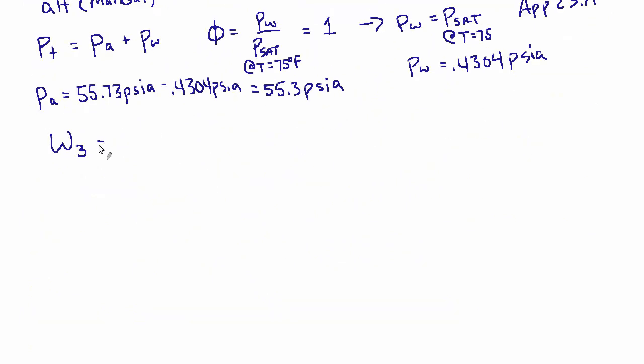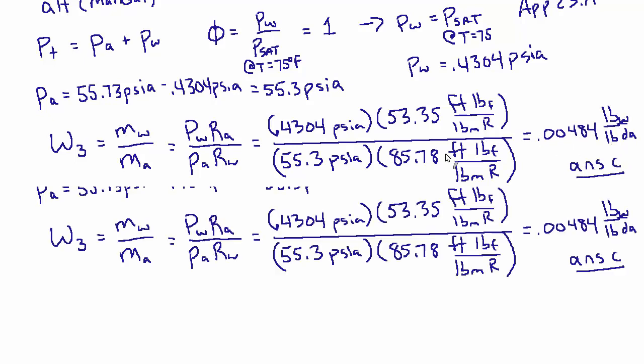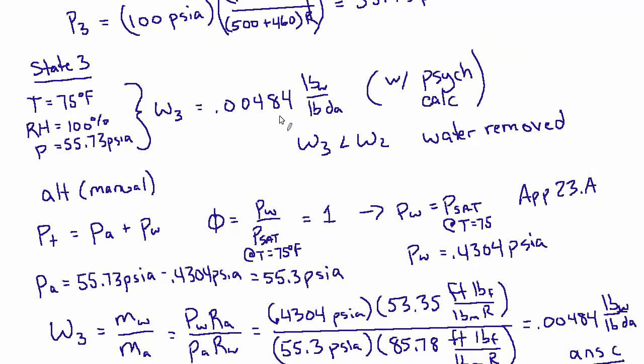The volumes and temperatures will cancel and we're going to get algebraically back to this point. So the humidity ratio for three equals the mass of water over the mass of air, which ends up being that fraction we just looked at. Partial pressure of water times specific gas constant of air divided by partial pressure of air times specific gas constant of water. And now we're going to use the pressures that we just found. 0.4304 times 53.35. That's our numerator. And then our denominator is 55.3 and 85.78. And after all the units cancel, that works out to 0.00484 pounds of water per pound of dry air. And that is the answer to C. And that also lines up perfectly with what came out of the psych calc.